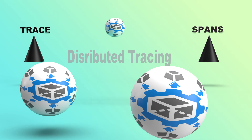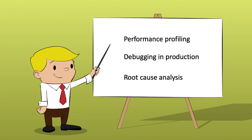Distributed tracing, which is also known as distributed request tracing, is a type of correlated logging that helps you gain visibility into the operation of a distributed software system. It consists of traces and spans. Distributed tracing is used for performance profiling, debugging in production, and root cause analysis of failures. It gives you the ability to understand exactly what a particular individual service is doing as part of a whole, in comparison to when you just look at a metric or log in isolation.